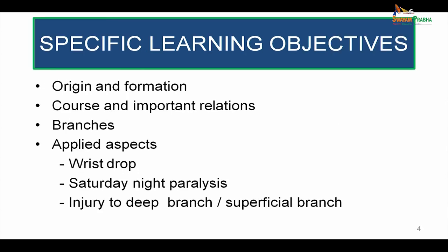Now, the specific learning objectives for today's session is to talk about the origin and formation of Radial Nerve, its course and important relations, the branches given off at various levels, and applied aspects in terms of wrist drop, Saturday Night Paralysis, and injury to the deep branch and superficial branch of the Radial Nerve.